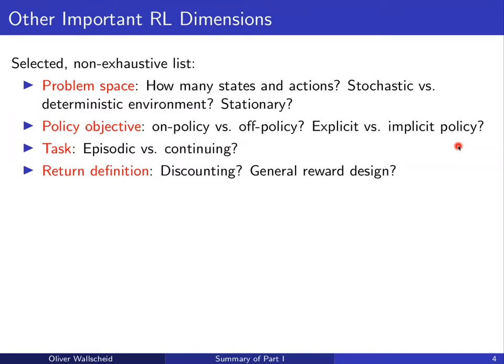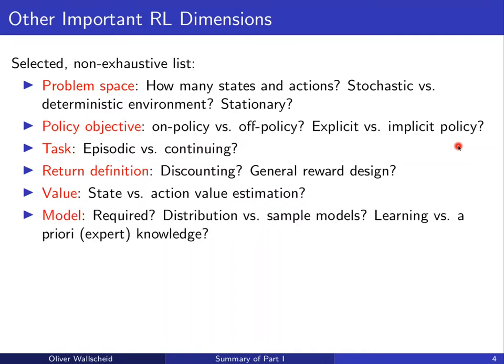The reward function can be naturally given by the problem — for example in games or finance — or engineers can formulate it themselves to support learning. This is a very important degree of freedom, since there is normally no predefined way to define optimal rewards, especially for technical control problems. Value estimation is also of prime importance; we discussed how to estimate and optimize state values and action values. Regarding the model, it is not required — model-free approaches can be used — however, that may be suboptimal as it does not use available data efficiently.